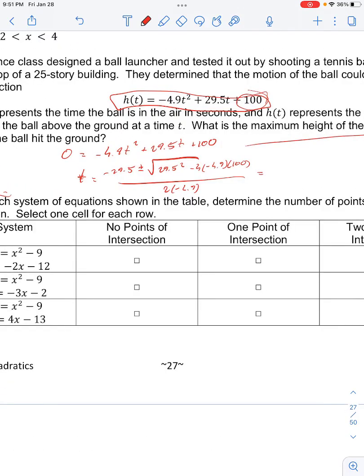My t is equal to negative 29.5 plus or minus this whole square root. So that would be 29.5 squared minus negative 4 times 4.9 times 100. Take the square root of that is 53.2. So our numbers don't work out very nice over negative 9.8.